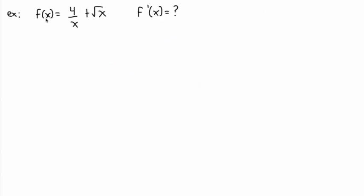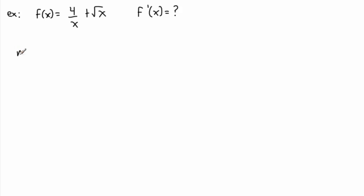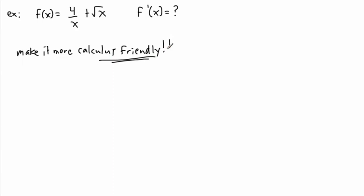This time we have f of x equals 4 over x plus square root of x. Now before doing this one, I actually want to show you something. It helps first of all to remember — and this is maybe a key thing right here — to make it more calculus friendly. This is going to be a common theme. What I mean by calculus friendly is to make it usable with this polynomial trick.